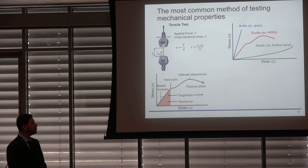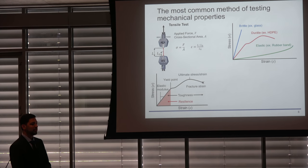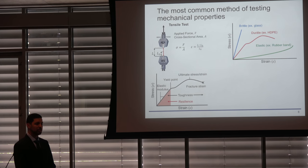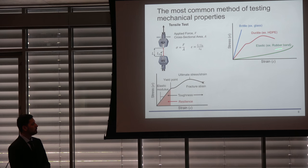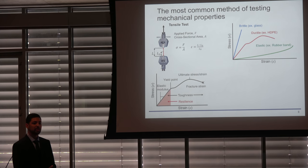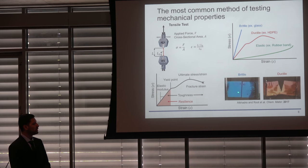There are three typical stress-strain behaviors. Brittle materials, like glass, accommodate stress elastically until fracture with no plastic deformation. Ductile materials, like a plastic bag, first absorb stress elastically and then plastically deform through rearrangement of polymer chains. Elastic materials, like a rubber band, accommodate large stress over a large strain range reversibly, up to 100 or even 200%.